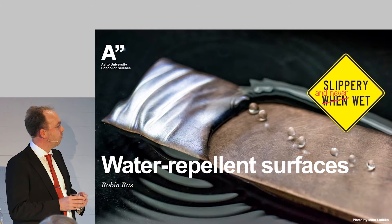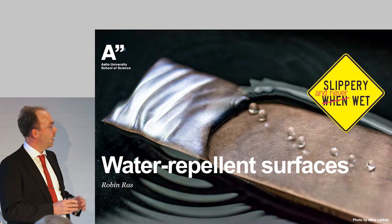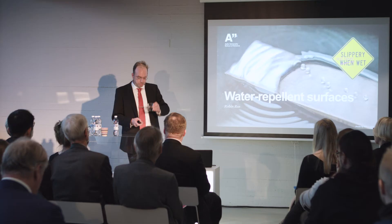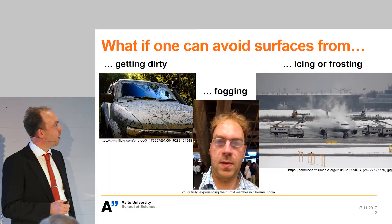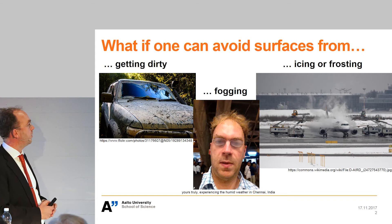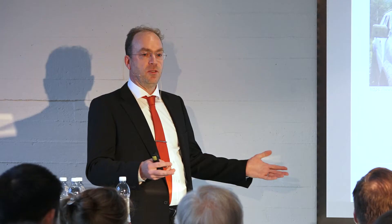These surfaces are extremely water repellent, and you see here one example that I will describe in more detail later. There are all kinds of problems related to surfaces. Surfaces have a tendency to get dirty — especially very clean surfaces have a tendency to get dirty. You all need to wash your car, your clothes, whatever. Companies are also interested in keeping their products clean for customers.